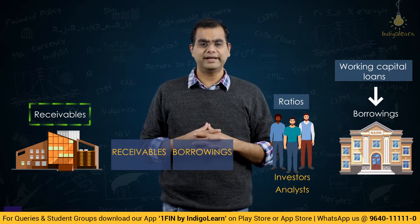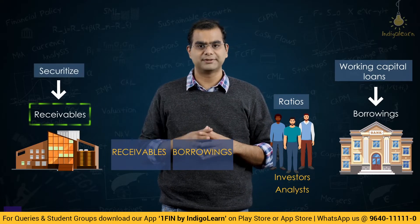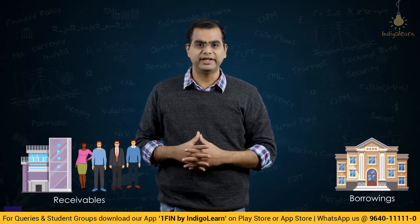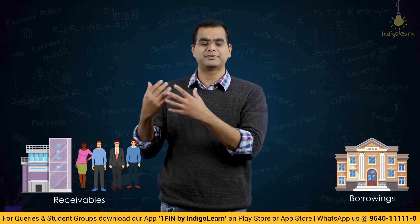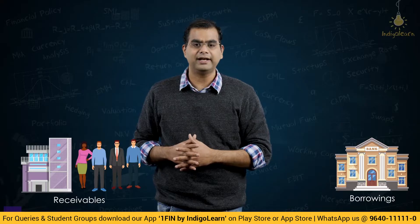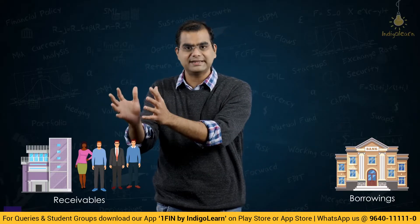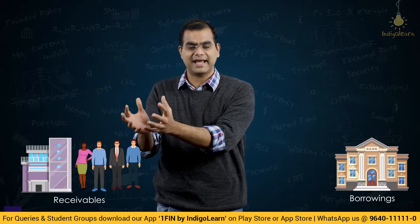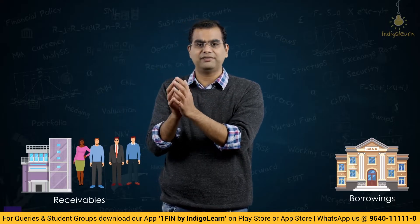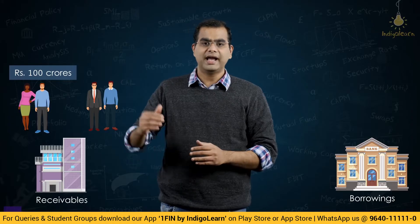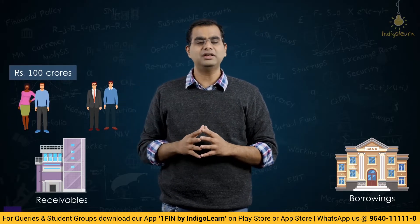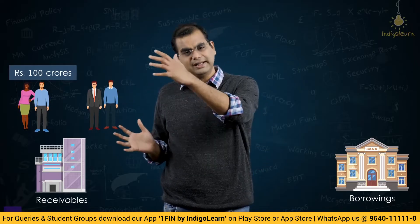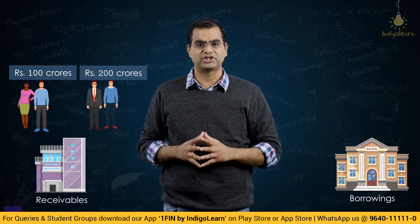So what we ended up doing was we started securitizing these receivables. We had a bunch of dealers from whom we expected money in the next 2 to 3 months. We would take the entire receivables from fertilizer sales and create a package — say 100 crores or 200 crores of receivables — split by fertilizer dealer with invoice details, making it a 100 or 200 crore bunch.